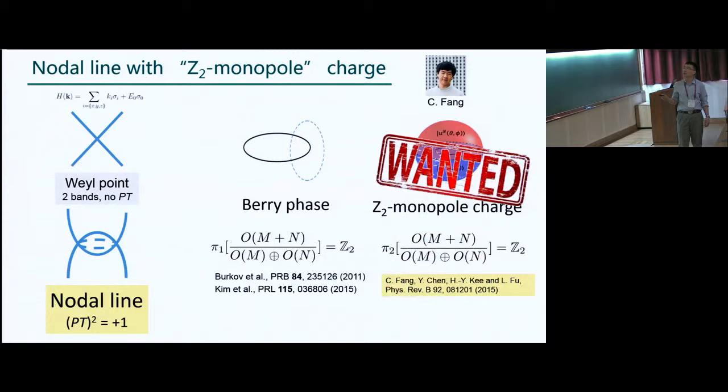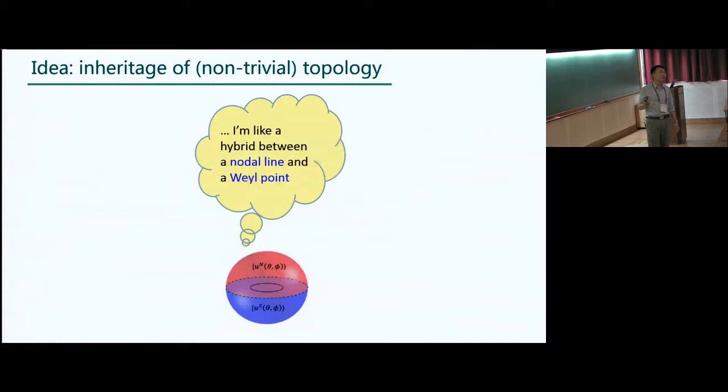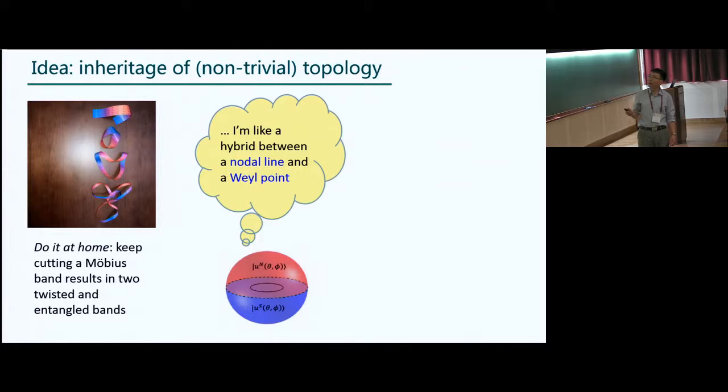So we realized that actually, maybe it's more convenient to realize type 2 nodal line from magnetic excitations. And the idea we had is by appreciating the fact that type 2 nodal line is like a hybrid between a type 1 nodal line and a Weyl point. It's hybrid with a Weyl point because it gives the essence of a point monopole charge inside this closed sphere. So how do we construct this? We then, philosophically, we thought about the idea of how topological properties can get inherited from something else.